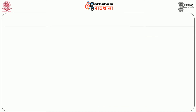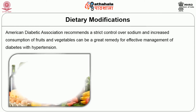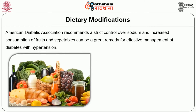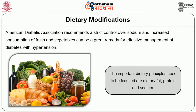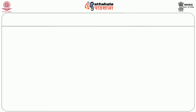Moving on to dietary modifications: the American Diabetes Association recommends strict control over sodium and increased consumption of fruits and vegetables, which can be a great remedy for effective management of diabetes with hypertension. The important dietary principles to be focused on are energy, dietary fat, protein, and sodium.